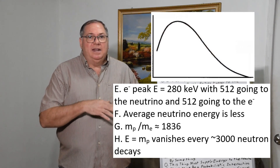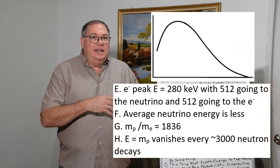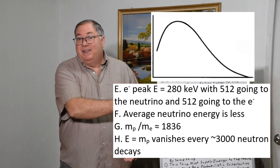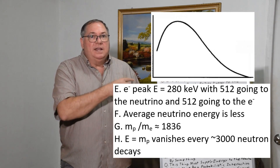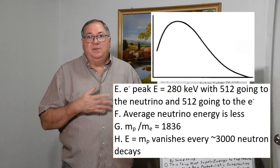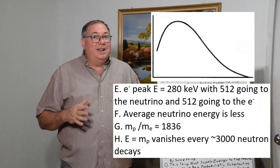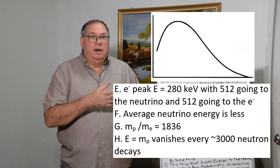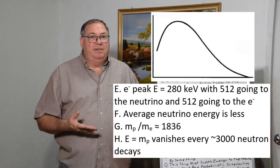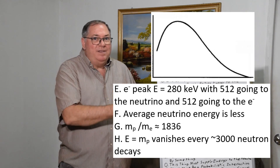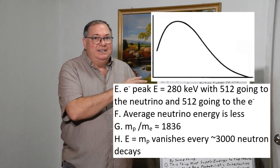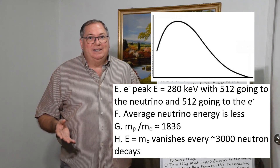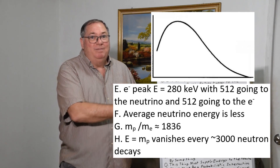We can look at the beta decay curve and see that it starts low, has a peak, and then drops down and tails off right about 782 keV. The peak is around 270–280 keV, which means the leftover energy is about 512 keV — which is the mass-energy of the electron. So you give off an electron, you have the mass-electron energy left over, which means you have pair-production energy of an electron-positron pair, and you form an electron. It's so simple.